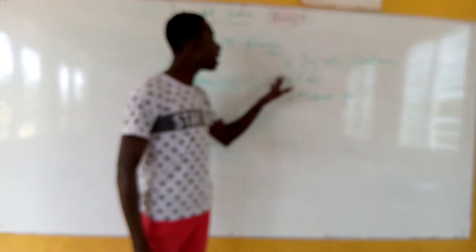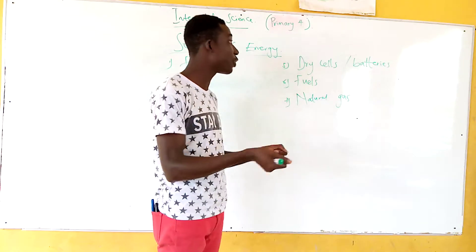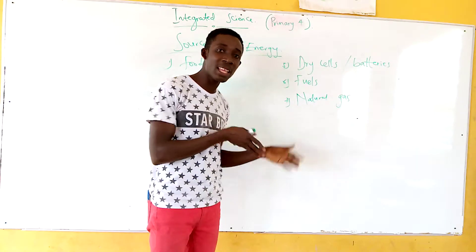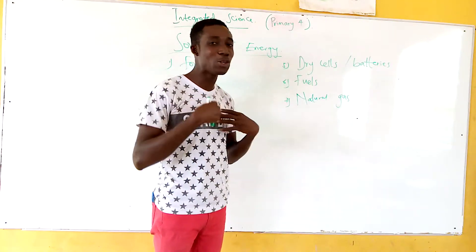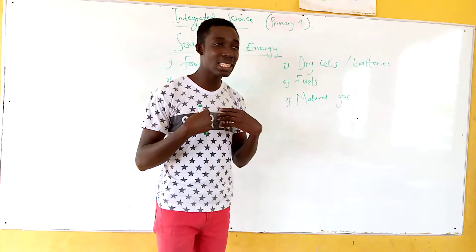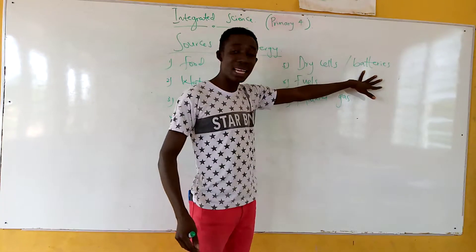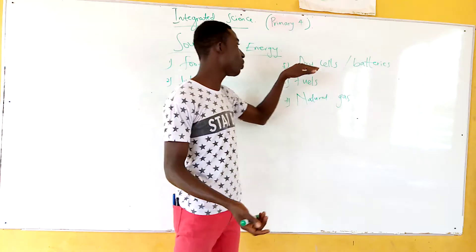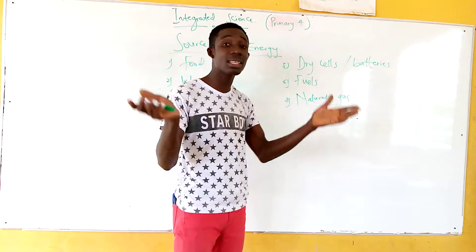Next is dry cells, or batteries. We get energy from them. As I said, different things use different forms of energy and work in different ways. There are things that need battery or dry cell energy to work — for example, torches and radios. We have so many things that use batteries.